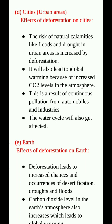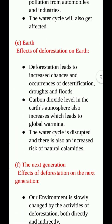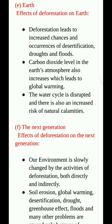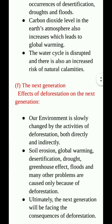Effects of deforestation on cities. The risk of natural calamities like floods and droughts in urban areas is increased by deforestation. It will also lead to global warming because of increased carbon dioxide levels in the atmosphere, as a result of continuous pollution from automobiles and industries. The water cycle will also get affected. Effects of deforestation on earth: deforestation leads to increased chances of desertification, drought and flood. Carbon dioxide levels increase, leading to global warming, and the water cycle is disturbed.